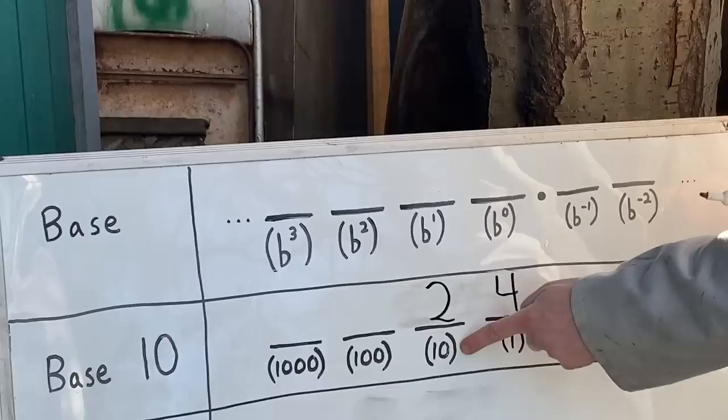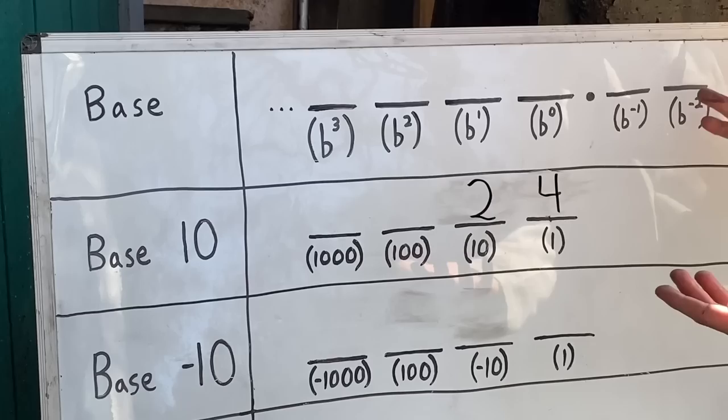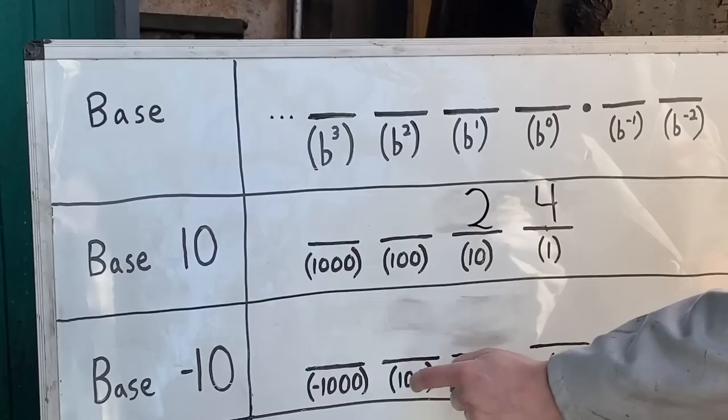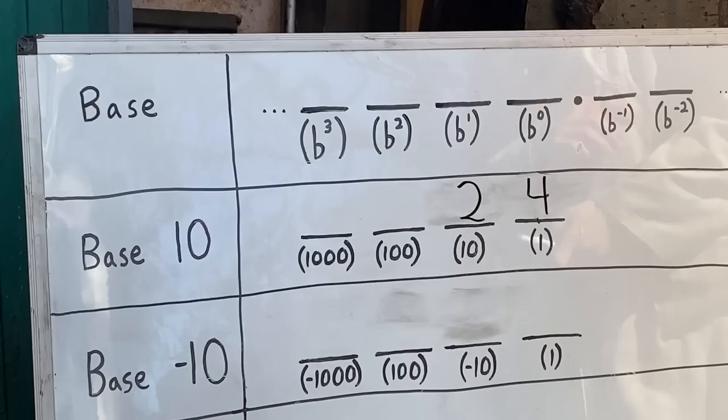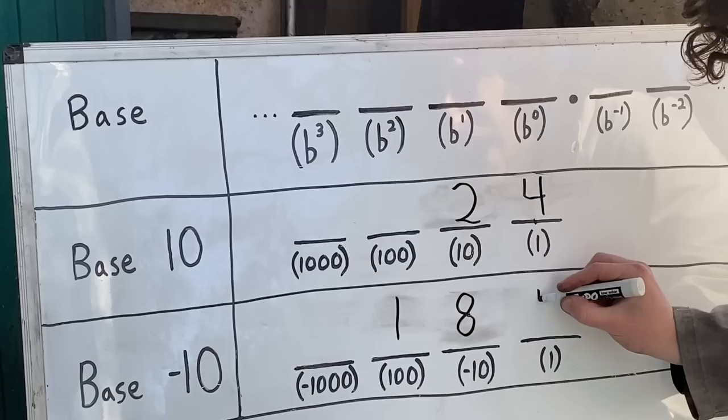But what if we wanted to write two dozen in base negative 10? Well now each of these spots in the number are some power of negative 10, which now alternate from positive and negative. You get 1s, negative 10s, hundreds, negative thousands, and so on. And we still can write two dozen, but the way we have to go about it is taking one of the 100s, 8 of the negative 10s, and four of the ones. And that's how base negative 10 would write 24.